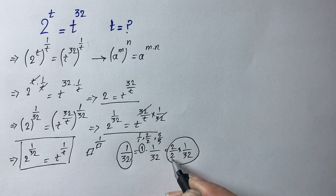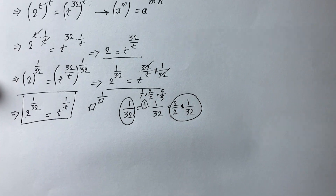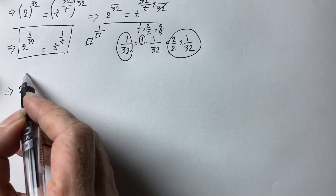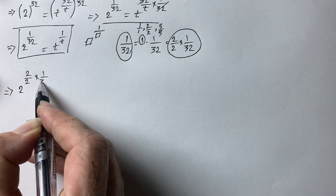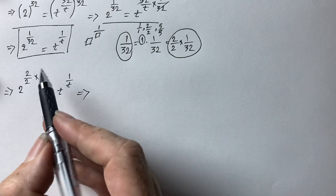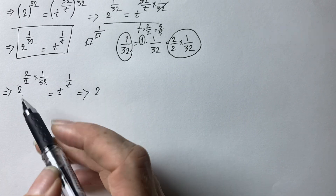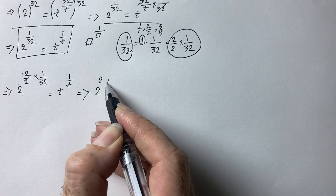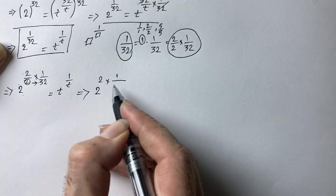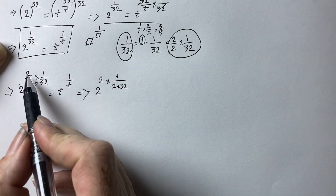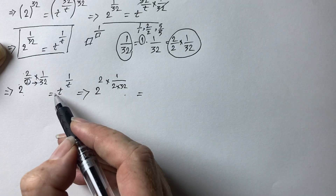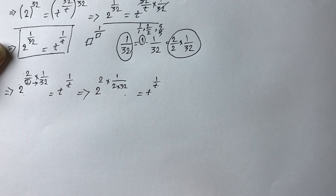So 1 over 32 equals 2 times 1 over 2 times 32. Rewriting the left hand side, we have 2 to the power of 2 over 2 times 1 over 32. Transposing the outer 2, we get 2 to the power of 2, raised to the power of 1 over 2 times 32. The right hand side remains t to the power of 1 over t.